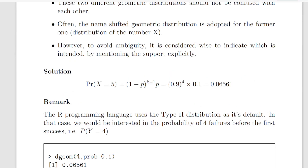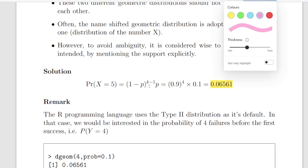Going back to the question: calculate the probability that x = 5, i.e., the first success will be on the fifth trial. Using the Type 1 geometric distribution — (1 − p)^(k−1) × p — that is 0.9^4 × 0.1, which gives us 0.06561. You don't have to go to as many decimal places, but it helps. So that's the answer using the Type 1 specification.